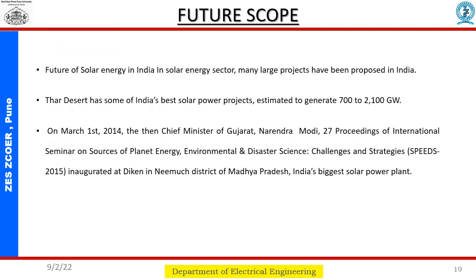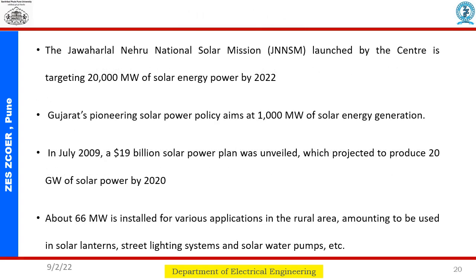In this slide we discuss future scopes. The Thar Desert has some of India's best solar power projects, estimated to generate 700 to 2100 gigawatts. In the solar energy sector, many large projects have been proposed in India, and we can see many other future scopes for this project.